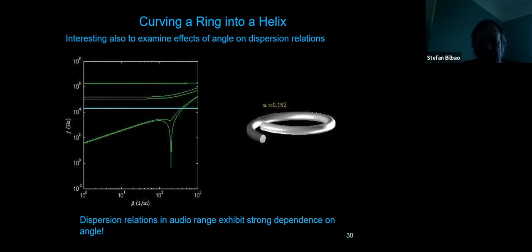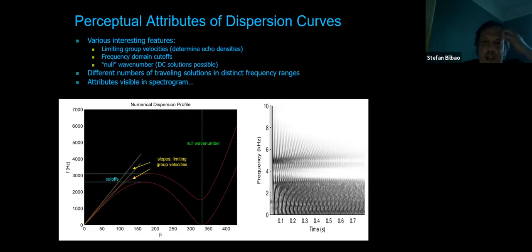Looking at the two primary dispersion relations for the spring—the only two that remain in the audio range for reasonable spring choices—and on the right a response, you can deduce a lot from the dispersion curves. The slopes at low frequencies correspond to the rates at which echoes recur in the lower spectrum, and at about three kilohertz there's a cutoff that corresponds to the transition between the two different frequency ranges visible in the spectrogram. So you can map these curves directly to the gross behavior of the spectrogram.